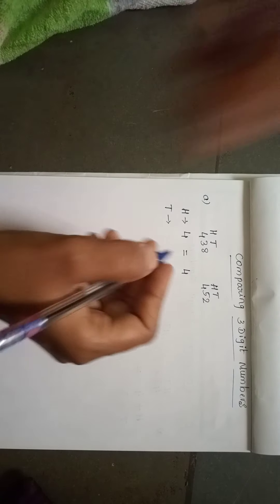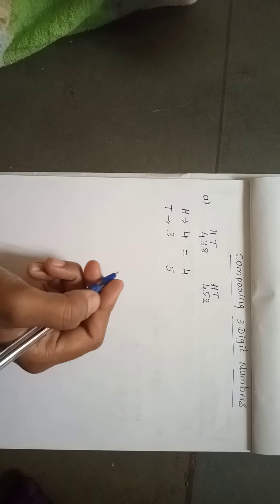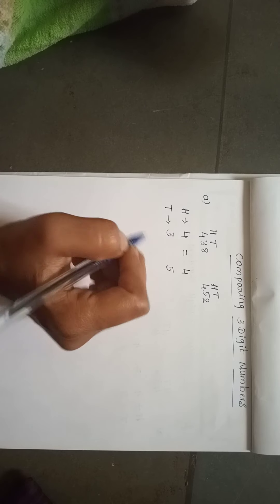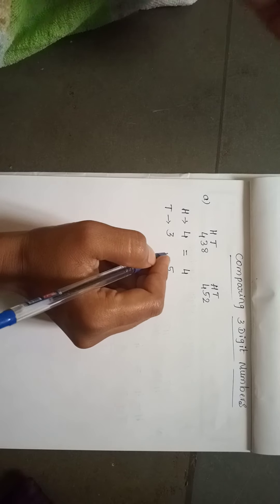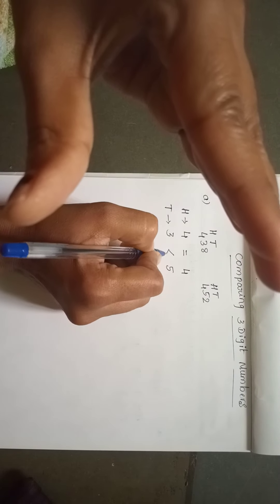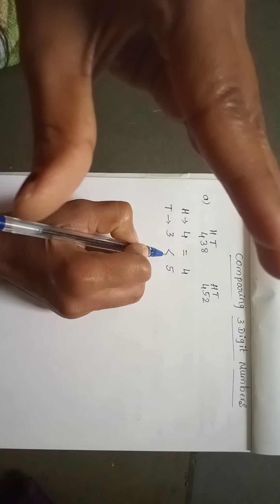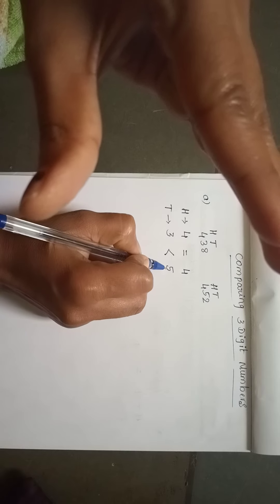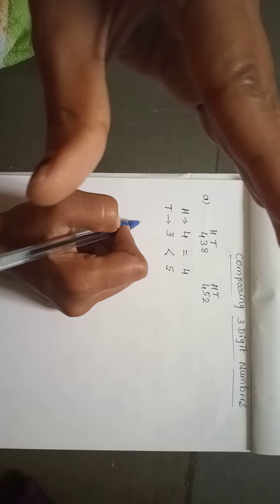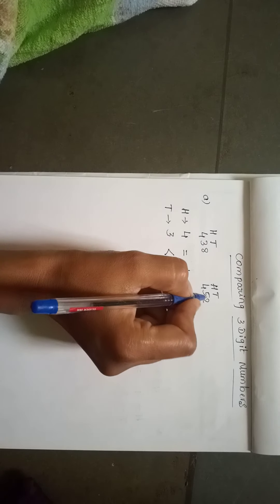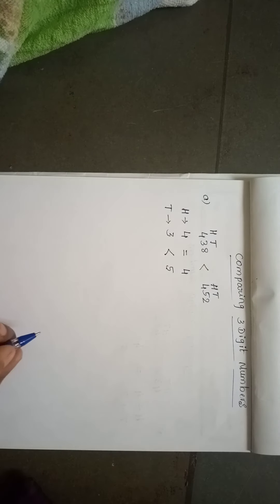In the 10th place, here the number is 3 and here it is 5. In 3 and 5, which is the bigger one? 5 is the bigger number. So open the crocodile mouth to number 5. Where the symbol's open end is, it shows the bigger number, and where it shows the sharp end, that is the smaller number. So 452 is the bigger number.